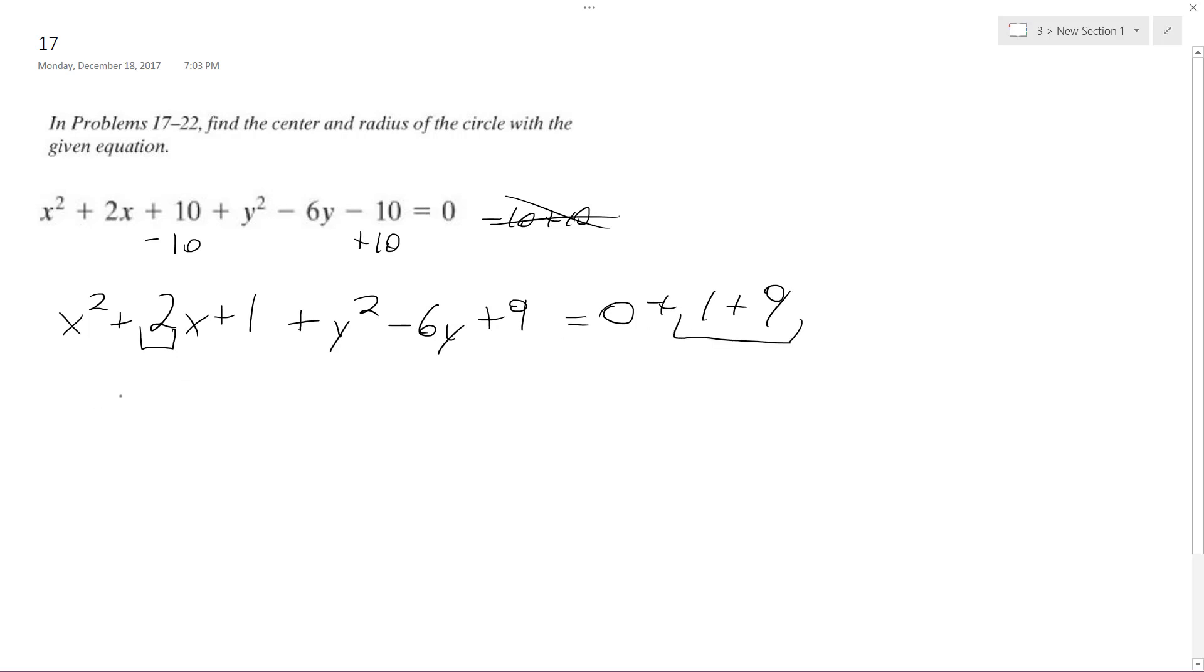I break this down to (x + 1) squared plus (y - 3) squared equals 10. This is the radius squared.